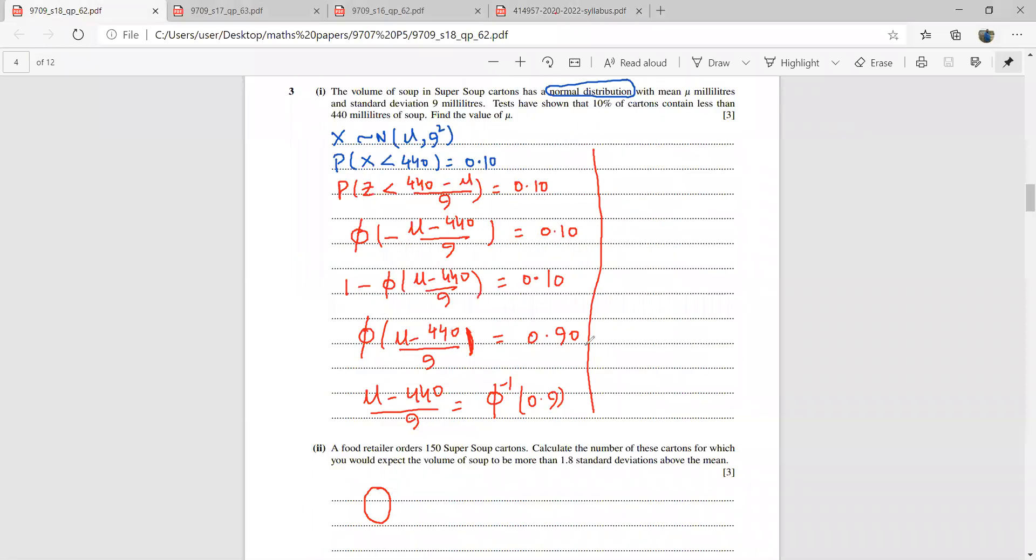I'll be using this value, 1.282. So mu minus 440, that is 9 into 1.282. Let's use the calculator here to find this value. This is 440 plus 9 into 1.282. So this mu is going to be 451.538. Correct to three significant figures, this is 451 ml.